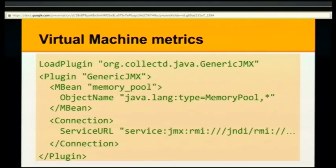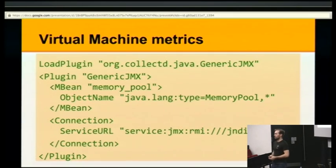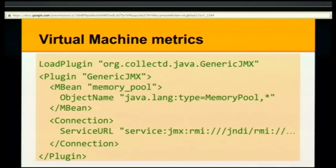This configuration is severely stripped down — there are a couple of lines missing — but I wanted to demonstrate that you load the plugin and then define the MBeans here. This is a mapping from the MBeans that the JVM provides to the data format that CollectD expects. Then you have a connection block down here that tells you which JVM to connect to. You can look at the CollectD wiki and find a longer list of predefined MBeans for Tomcat, Catalina, and some Java servers, and just copy and paste this into your configuration.